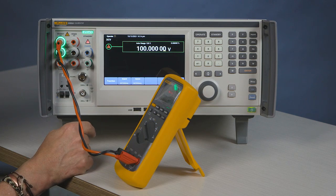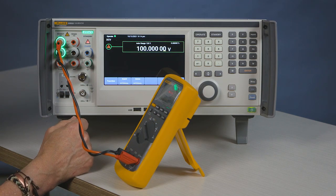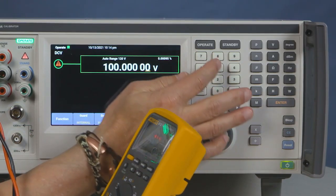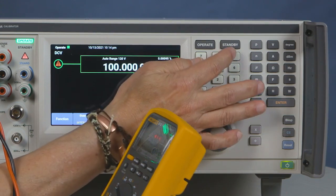Press operate. Now you're engaged into the 100 volt range. At that point, you're done with the calibration. Just press standby.